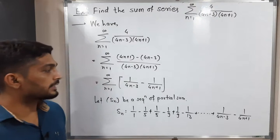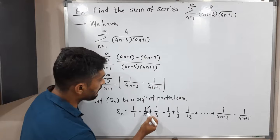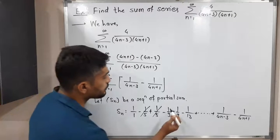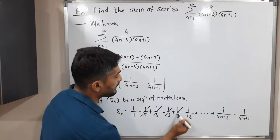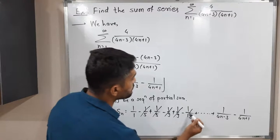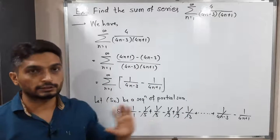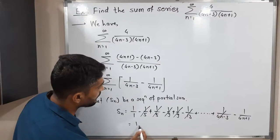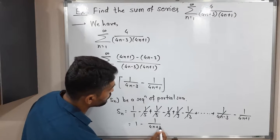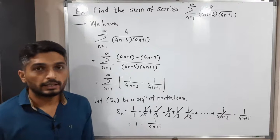Can we cancel any terms here? Yes, definitely. The minus 1/5 and plus 1/5 cancel each other. The minus 1/9 and plus 1/9 cancel each other. In this way, all intermediate terms cancel, leaving only the first and the last. So we have sn equal to 1 minus 1 upon (4n plus 1).